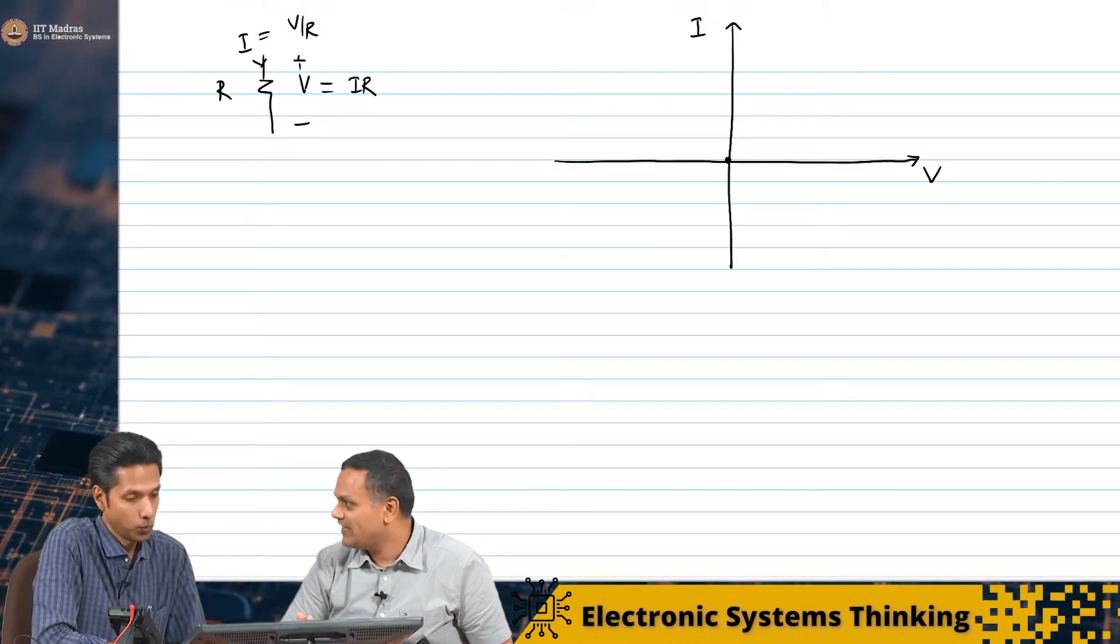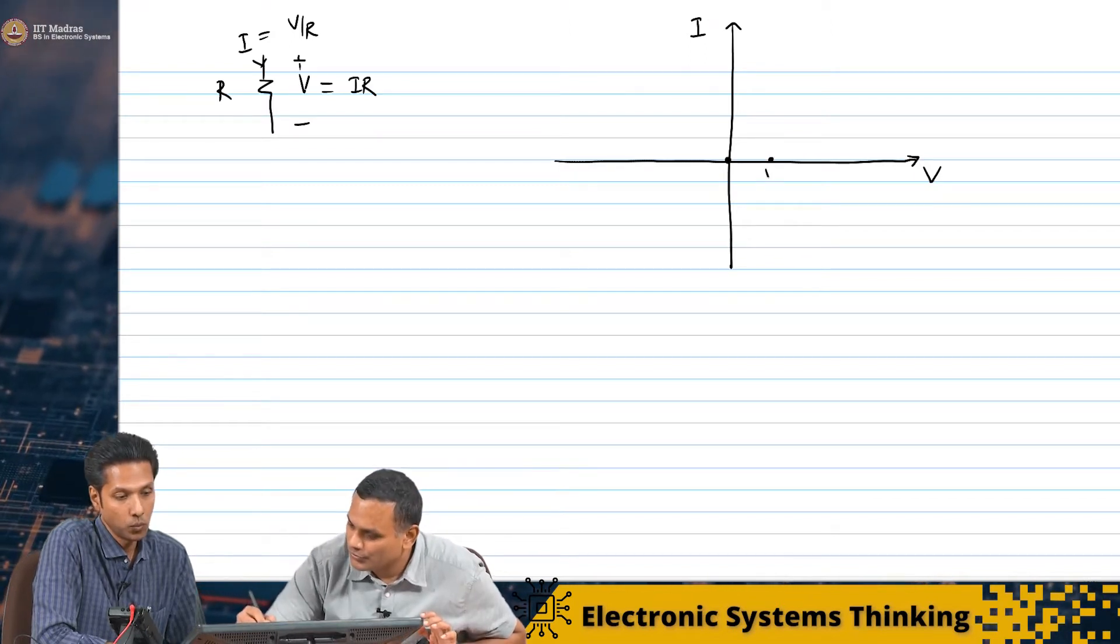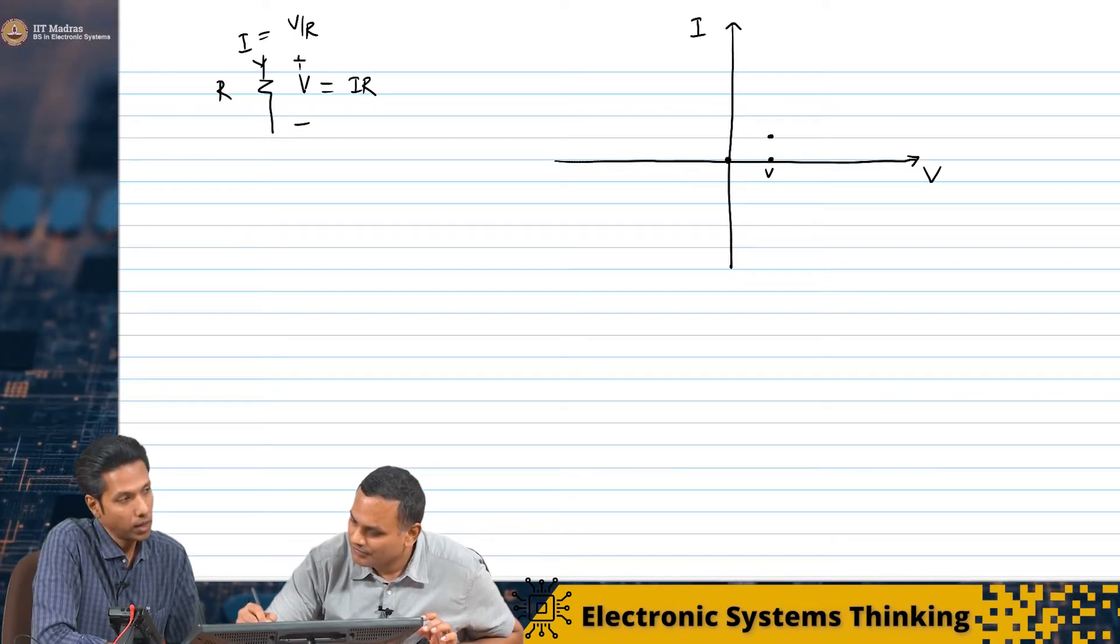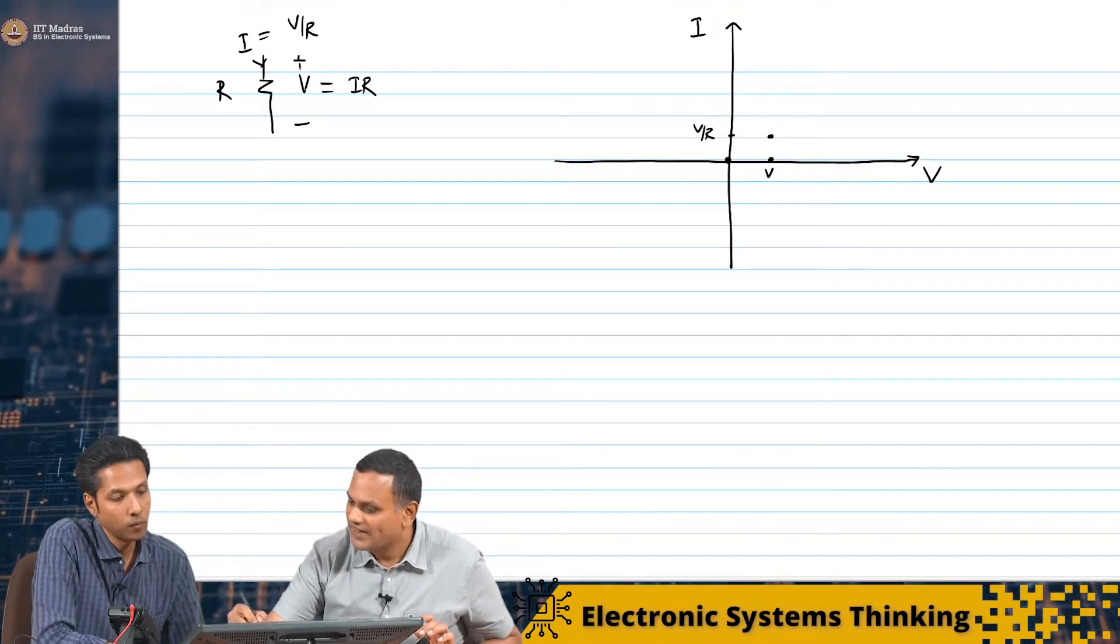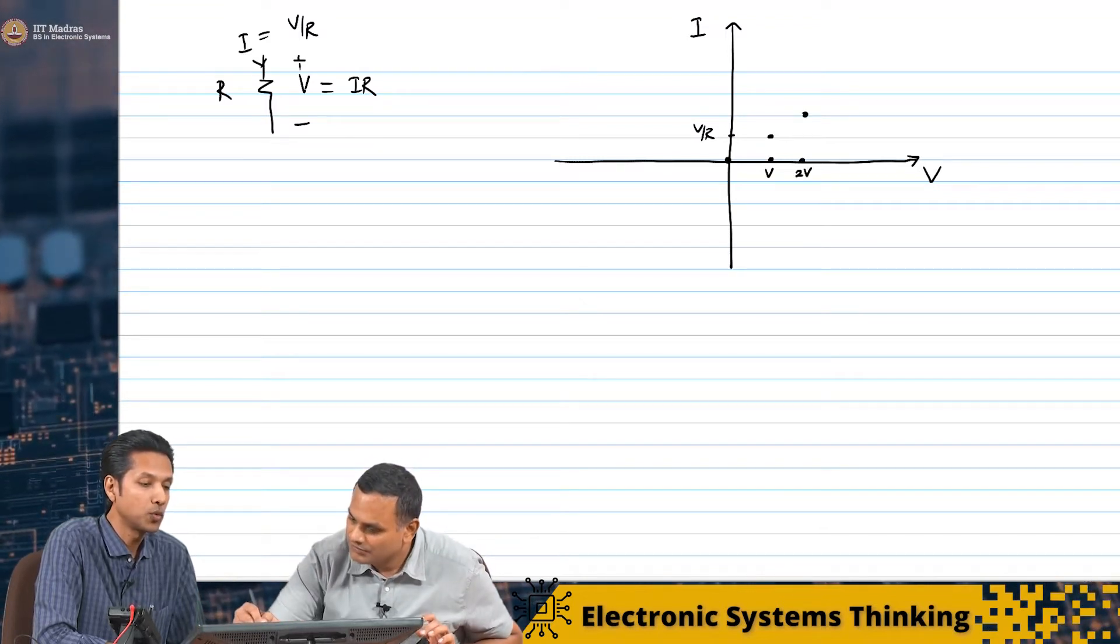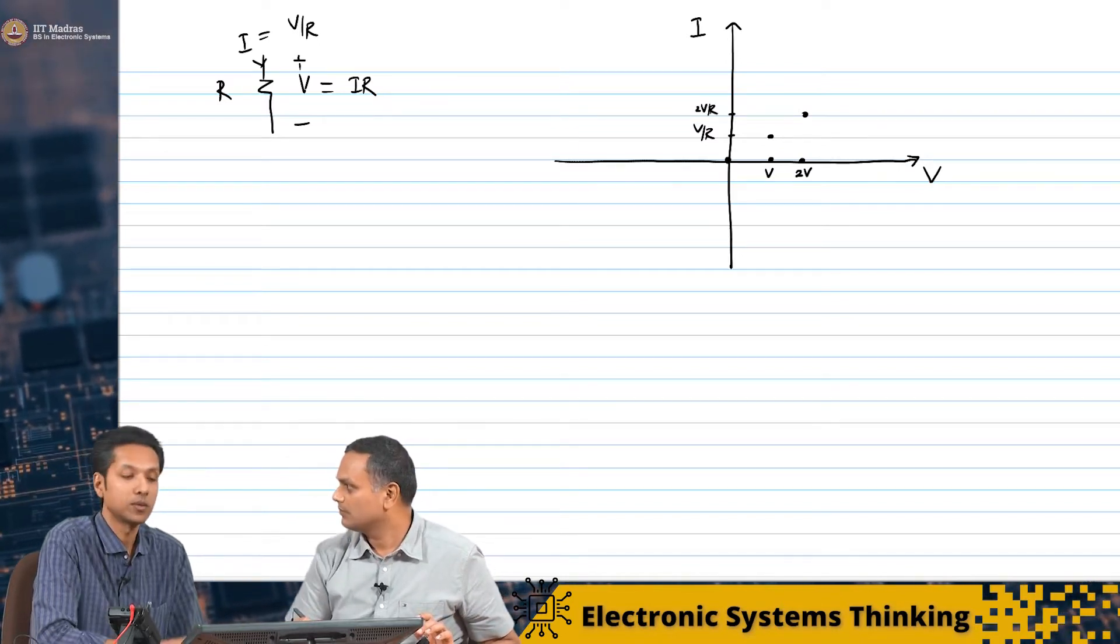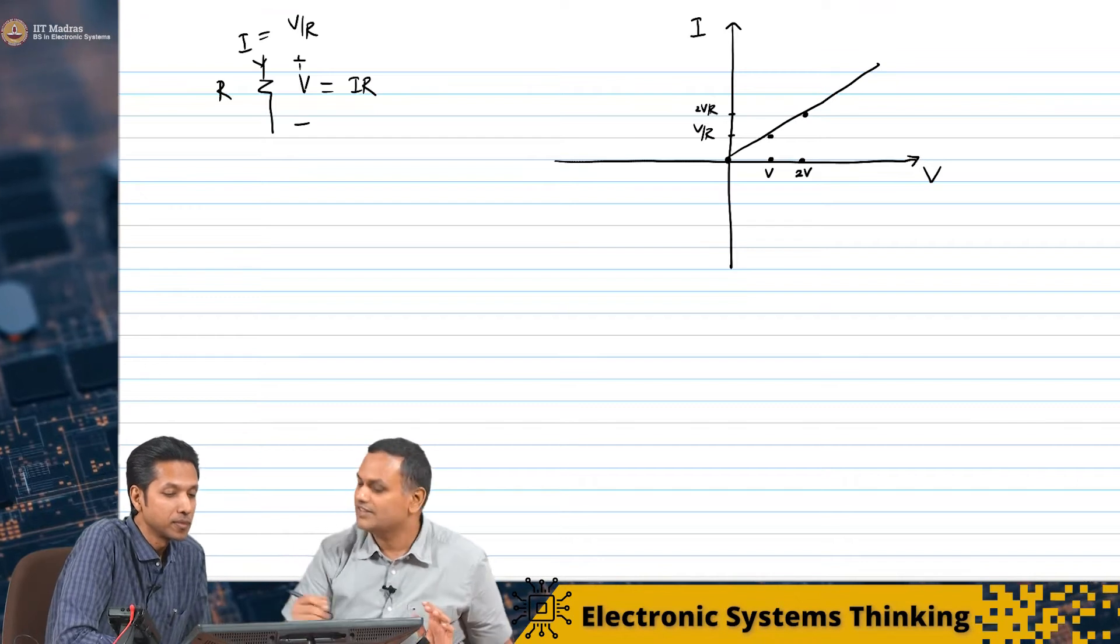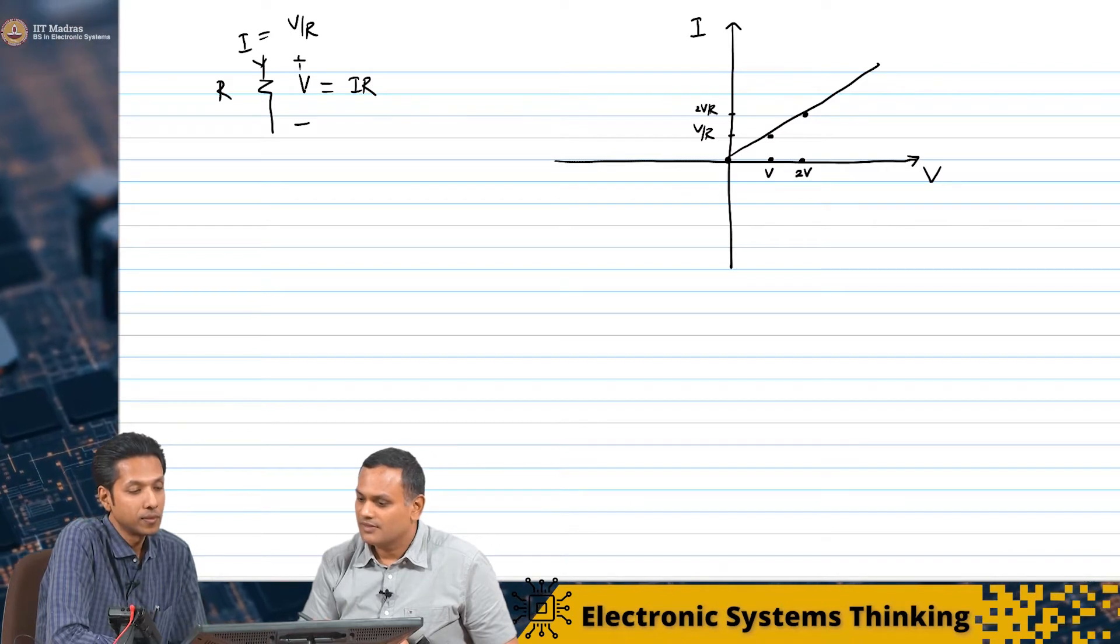Then if I apply a voltage V, we saw the current is V by R. If I apply V, I will get a current V by R. If I apply 2V, I will get a current 2V by R, and so on. This will be a line like that, a straight line passing through the origin.